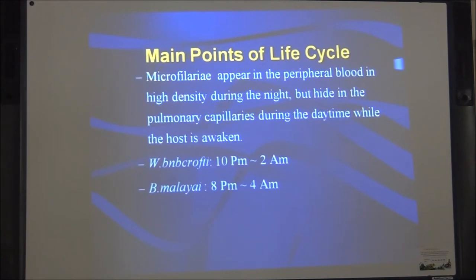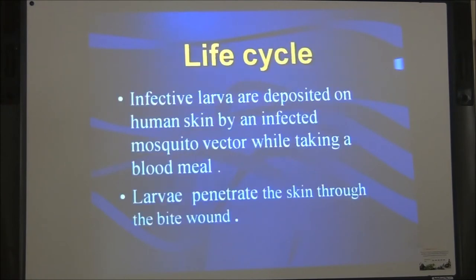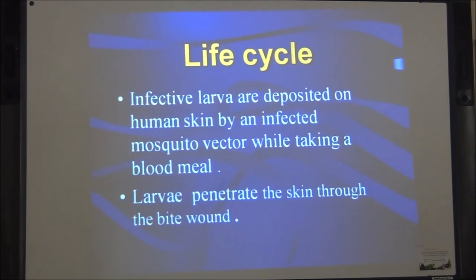The microfilaria appear in the peripheral blood in high density during the night but hide in the pulmonary capillaries during the daytime while the host is awake. The peak time of W. bancrofti microfilaria in the blood is 10 pm to 2 am. Infective larvae are deposited on the human skin by infected mosquitoes — Anopheles and Aedes — while the mosquito takes a blood meal. The larvae then penetrate the skin through the bite wound.